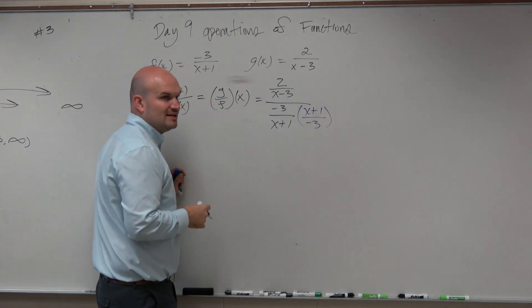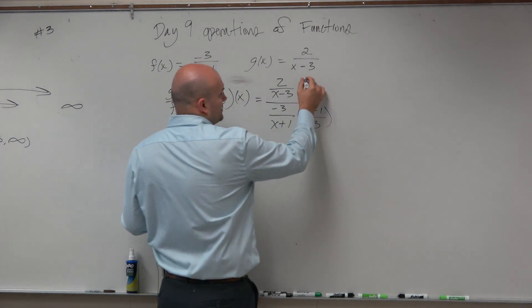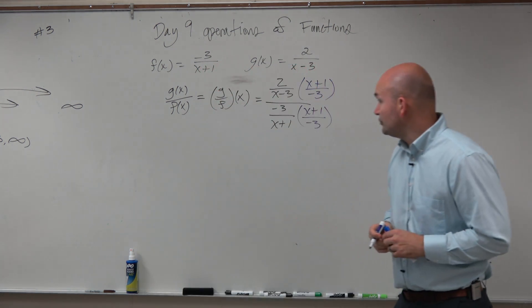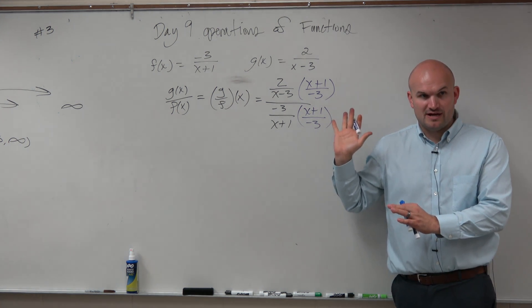Well, guys, whenever you multiply in the denominator, you have to multiply the same thing in the numerator to keep an equivalent fraction. Would everybody agree with me that mathematically, that is OK to do on a fraction?